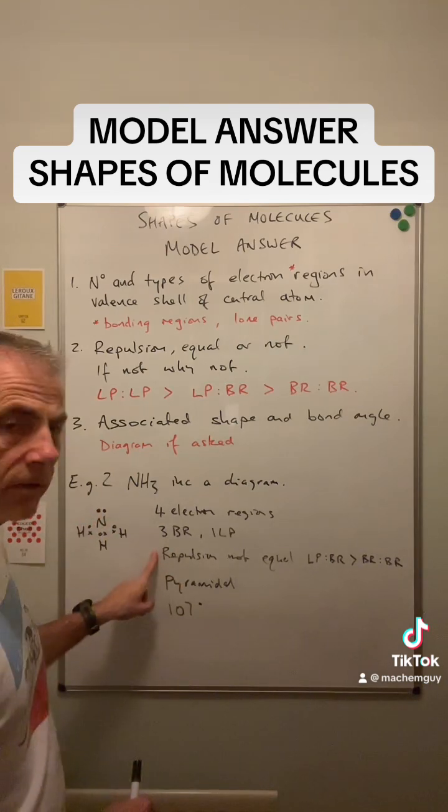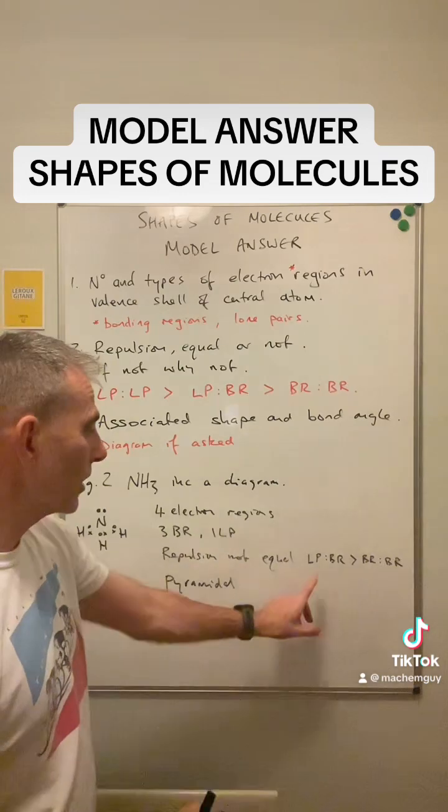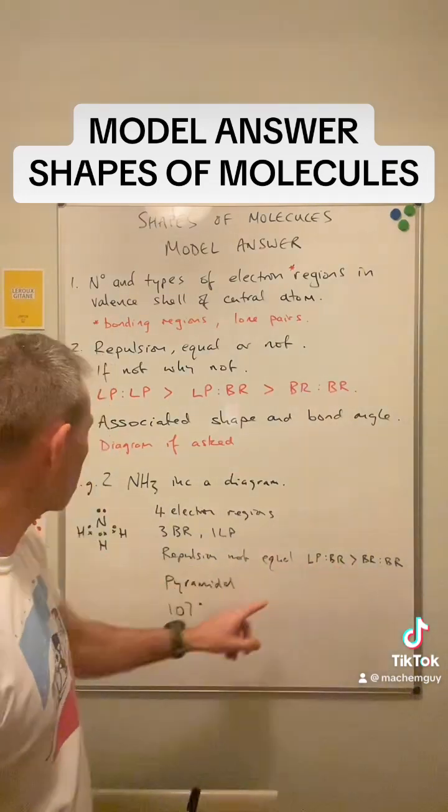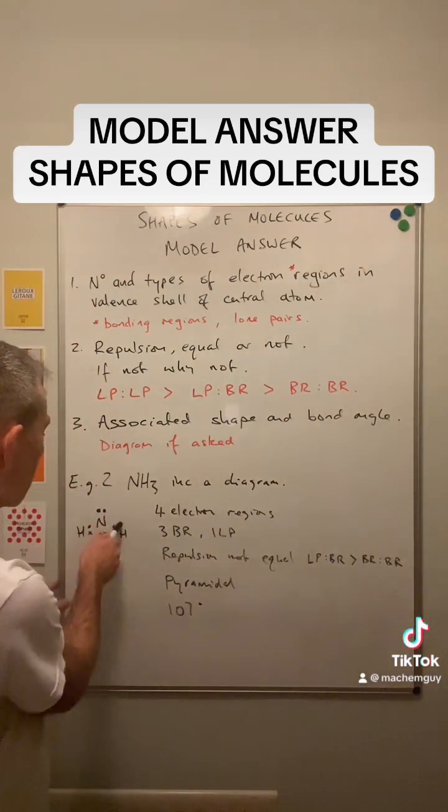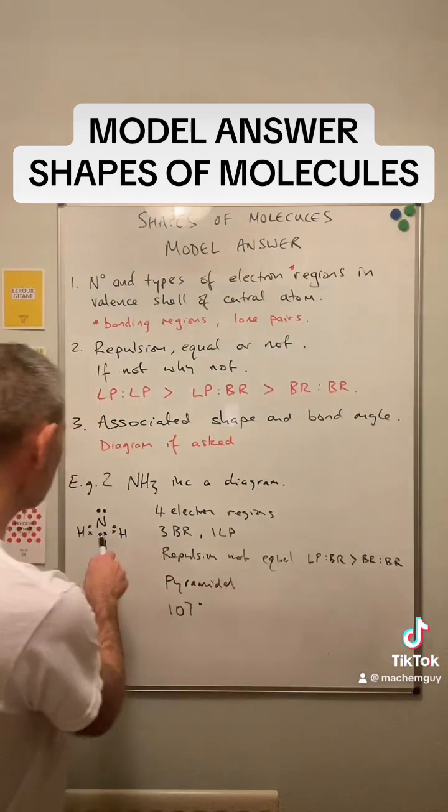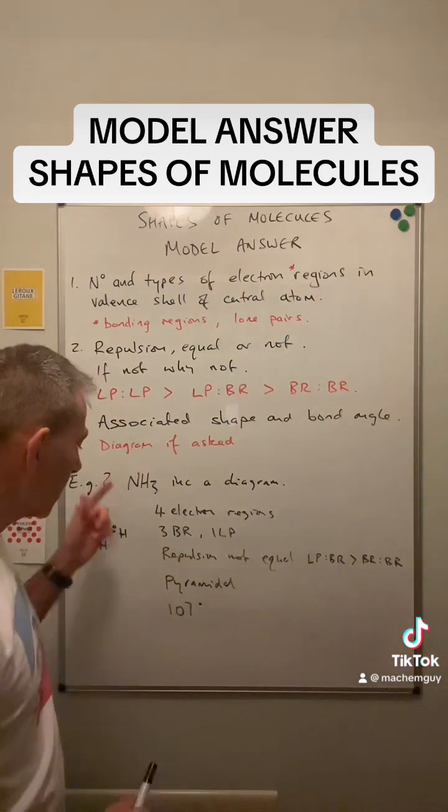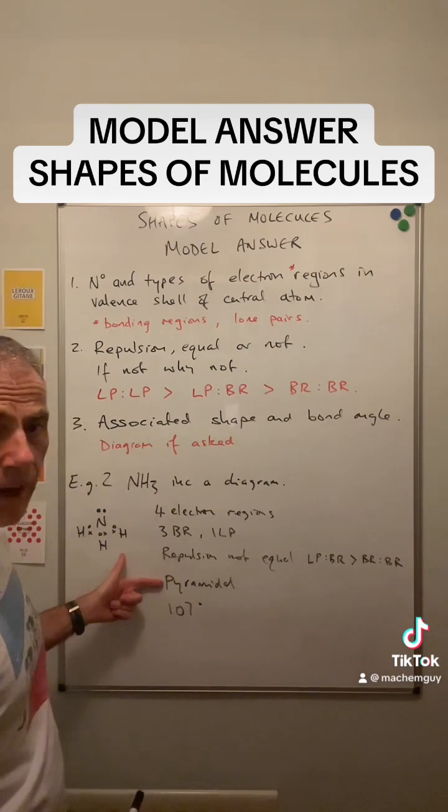Repulsion won't be equal. And that's because the lone pairs repel more. So that's lone pair to bonding region. So this repulsion here is greater than the bonding region to bonding region. The shape associated with that is pyramidal.